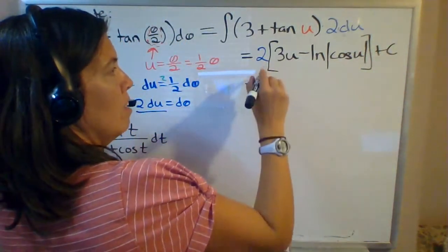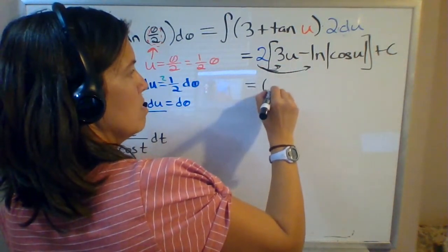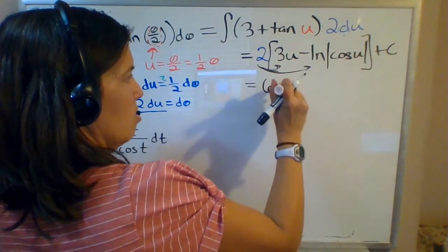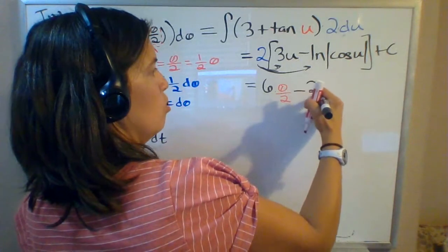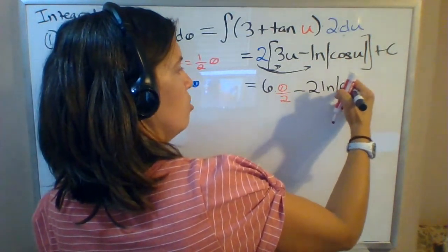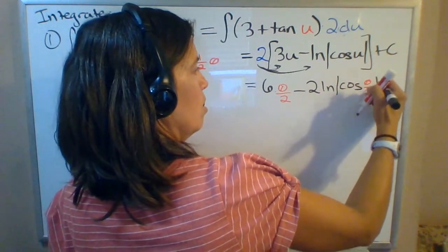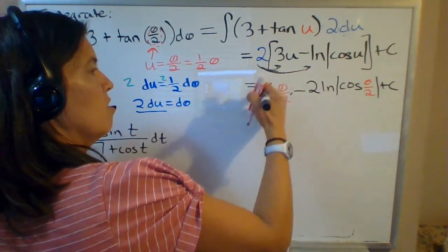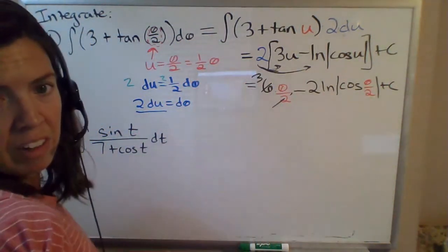So our final answer, I'm going to go ahead and distribute the 2 here. So this is 2 times 3 is 6 times u, which is theta over 2 minus 2 times natural log absolute value of cosine of u, which is theta over 2 plus c. And then of course we should reduce this to 3 theta. I'm not going to rewrite the whole thing, but there's your final answer.